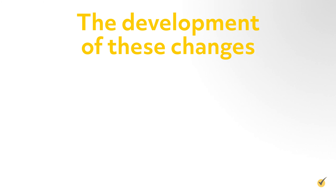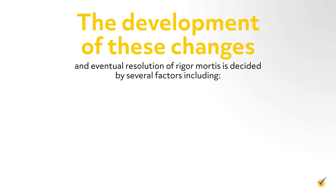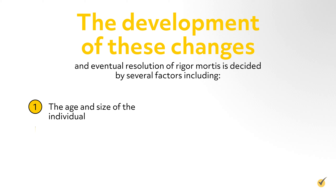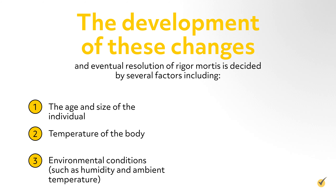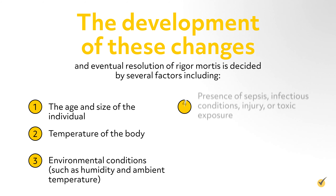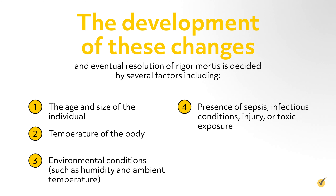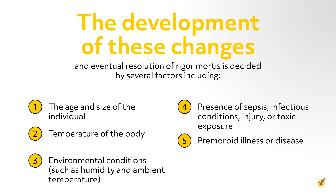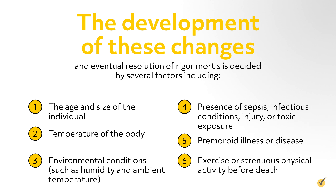The development of these changes and eventual resolution of rigor mortis is decided by several factors including the age and size of the individual, temperature of the body, environmental conditions such as humidity and ambient temperature, presence of sepsis, infectious conditions, injury, or toxic exposure, premorbid illness or disease, and exercise or strenuous physical activity before death.